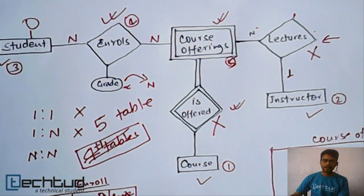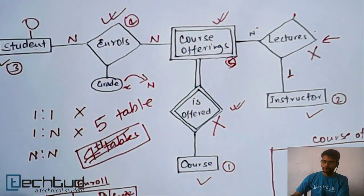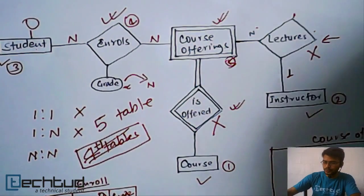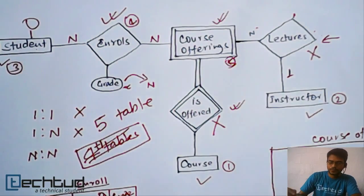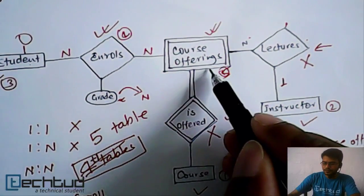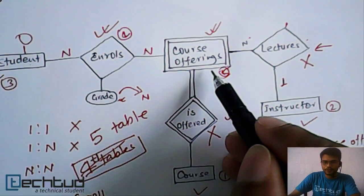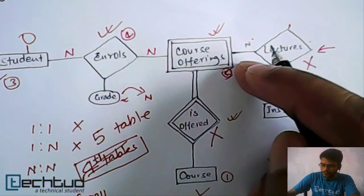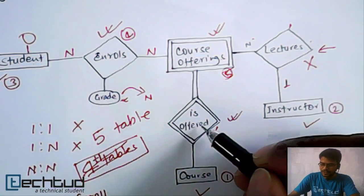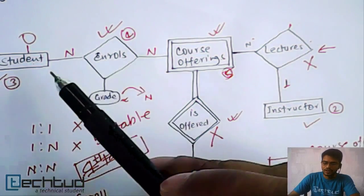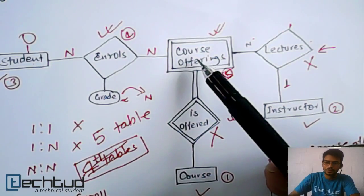So in the last example, I don't know whether you got this doubt or not, but I just wanted to clarify. Here we have course offering which is a weak entity. Now this weak entity has an identifying relation called is offered, and this is the enroll relationship where students enroll for course offerings.